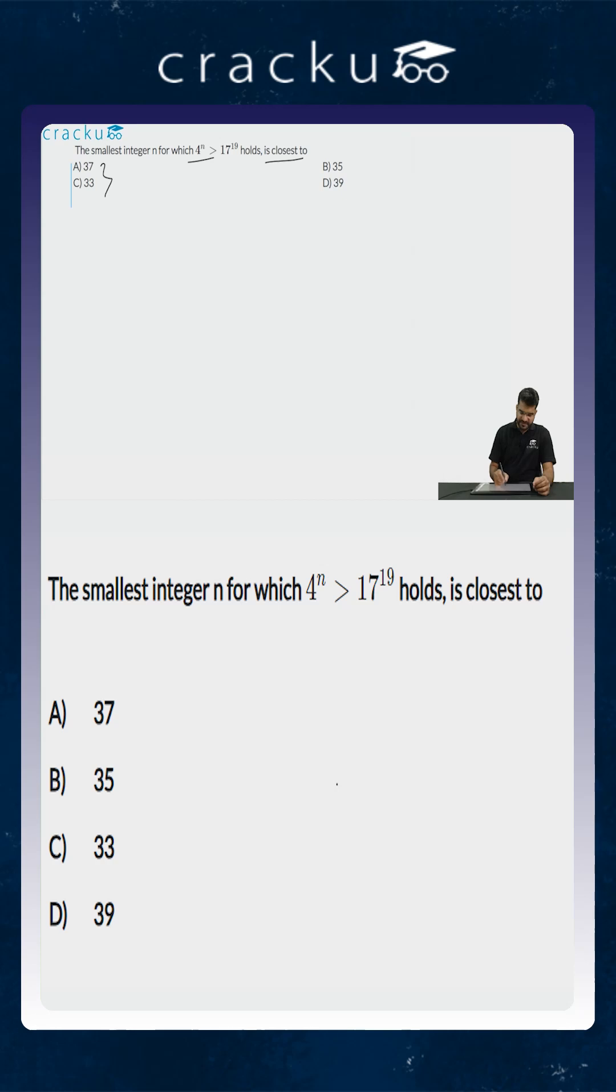Now if you look at the options and the question, it looks slightly complicated. It would require a lot of understanding because we don't know the value of either log 17 or log 4. If you had some understanding of these logs then probably we could have solved it, but the interesting part about this question is that you don't need to calculate the value of n. You can just look at the options and then figure out which of them is closest to n.